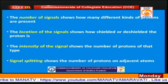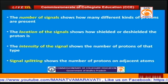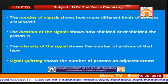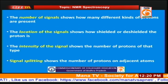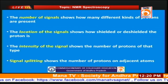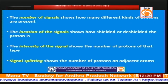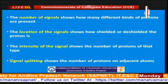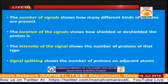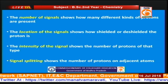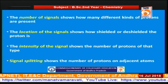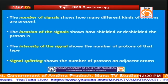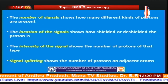The number of signals shows how many kinds of protons are present. The location of the signal gives an idea of whether the proton is deshielded or shielded compared to TMS. The intensity of the signal gives the number of protons. Spin splitting gives an idea about how many protons are surrounding a particular proton and coupling with the proton of interest.